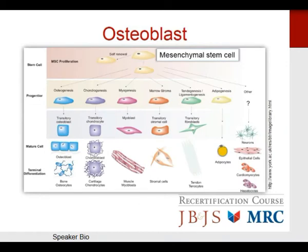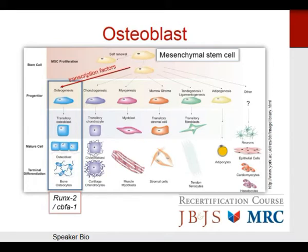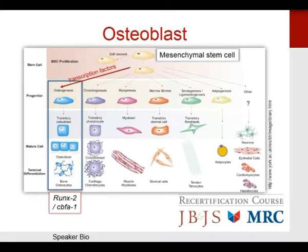Osteoblasts all come from mesenchymal stem cells. Transcription growth factors tell them to become osteoprogenitor cells, which become osteoblasts. The important transcription factors to remember are RUNX2 and CBFA-1. Mesenchymal stem cells can form a variety of cell types — osteoblasts, chondrocytes, myocytes, and adipocytes — based on the transcription factors to which they're exposed. In the absence of RUNX2 and OSX, no osteoblasts are formed.